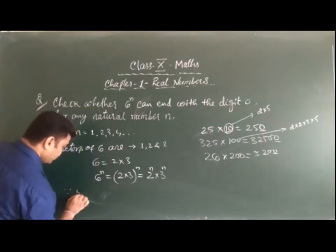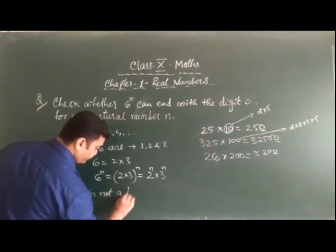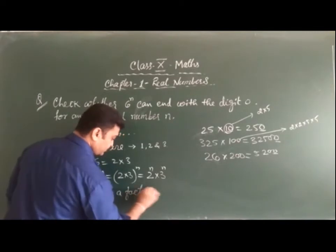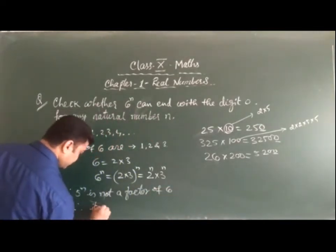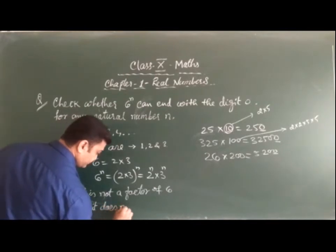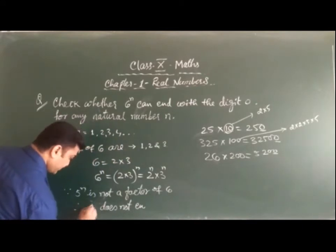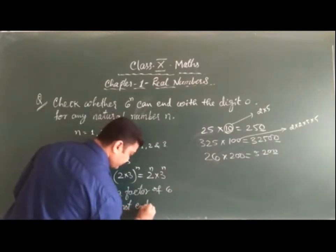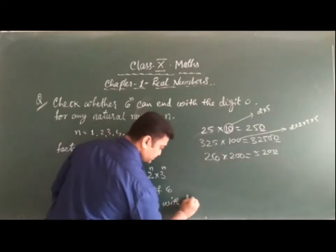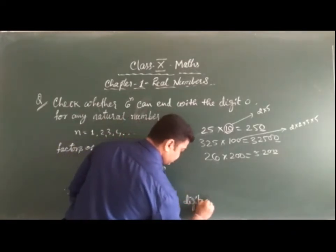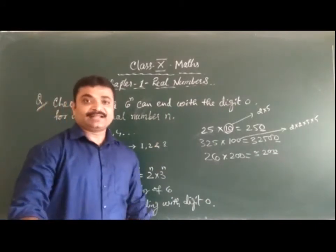Since 5 is not a factor of 6, 5^n is also not a factor of 6^n. Therefore 6^n does not end with digit 0.